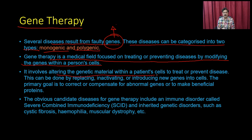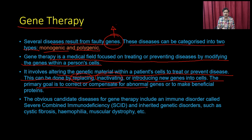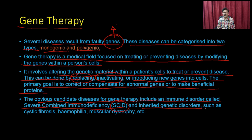Gene therapy involves altering genetic material by either replacing, inactivating, or introducing new genes into cells. The primary goal is to correct or compensate for abnormal genes or to make beneficial proteins. Obvious candidate diseases include immune disorders such as severe combined immunodeficiency (SCID), and genetic disorders such as cystic fibrosis, hemophilia, and muscular dystrophy.